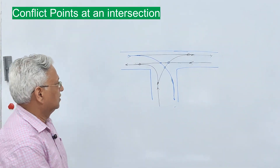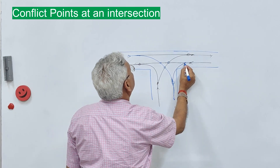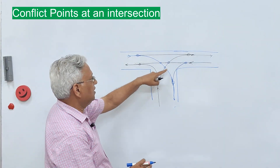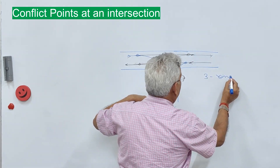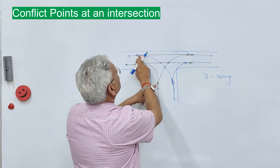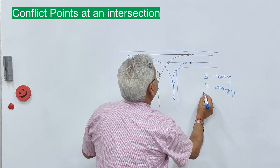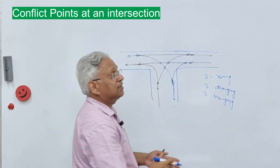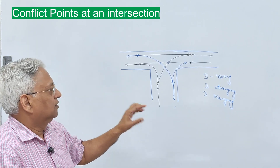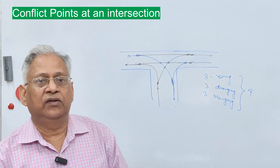These are three major crossing points, and all three are oblique crossings — none of them is a normal or perpendicular crossing. There are also three diverging points and three merging points. So you can say three major points of conflict — that is crossing — and six minor points of conflict: three diverging and three merging. The total is nine points of conflict at a three-leg intersection with two-way traffic on each leg.